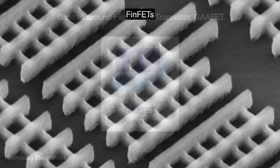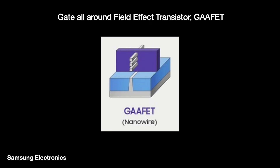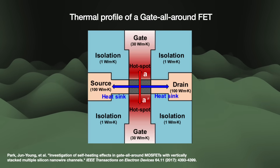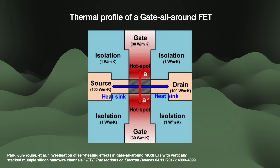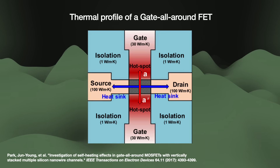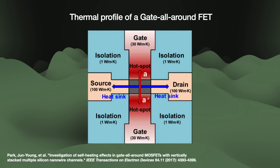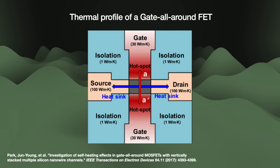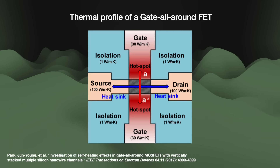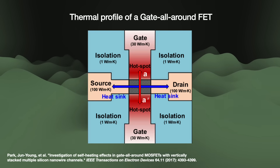Looking ahead into the future, we have the N2 class of nodes, which will implement gate-all-around nanosheet transistors. With gate-all-around, the fin is replaced by a stack of ribbons with the gate stack wrapping around the entire channel. While we have not yet confirmed the final heat profile of these things, just looking at it can tell you that this is not going to conduct heat well — the gate oxide surrounds the channel on all sides, the hot spots are further away from the substrate than ever before, and the whole thing is quite tall.